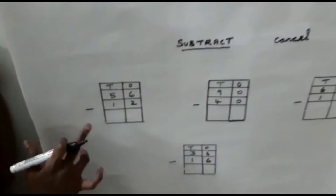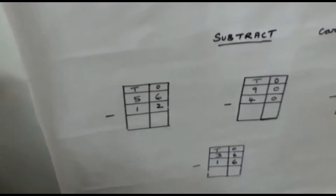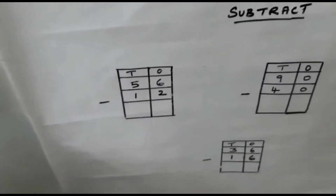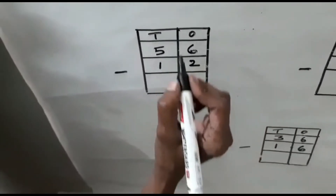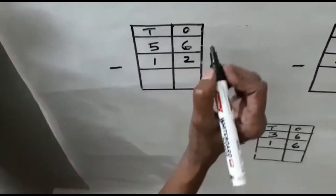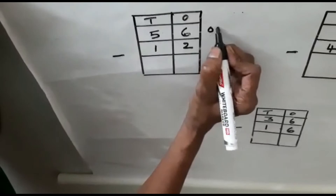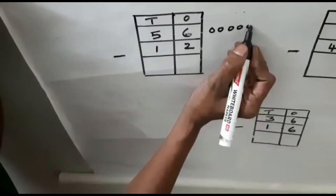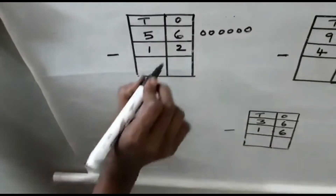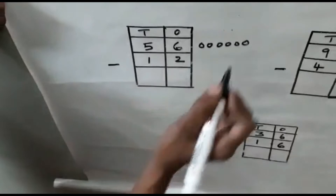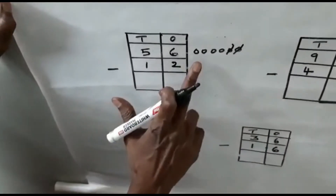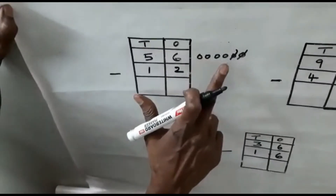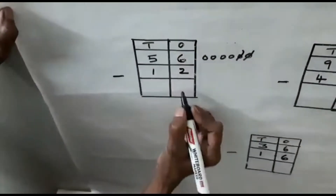Now we are going to see subtraction — you must cancel it. We are going to minus. Now 6 minus 2: you must put 1, 2, 3, 4, 5, 6. You must cancel 2 numbers: 1, 2. Now how many numbers are remaining? 1, 2, 3, 4. 4 is the answer.